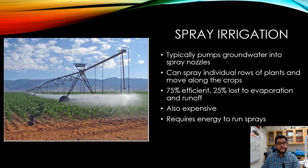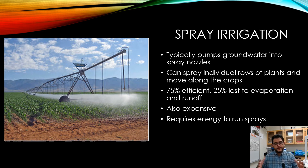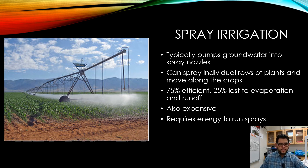Spray irrigation is a bit better — it's about 75% efficient. The downside is that you need energy to run the sprayers and time them out. It typically pumps groundwater up into spray nozzles that spray over the plants. So it's better than flood or furrow, but still not as efficient as you'd like.